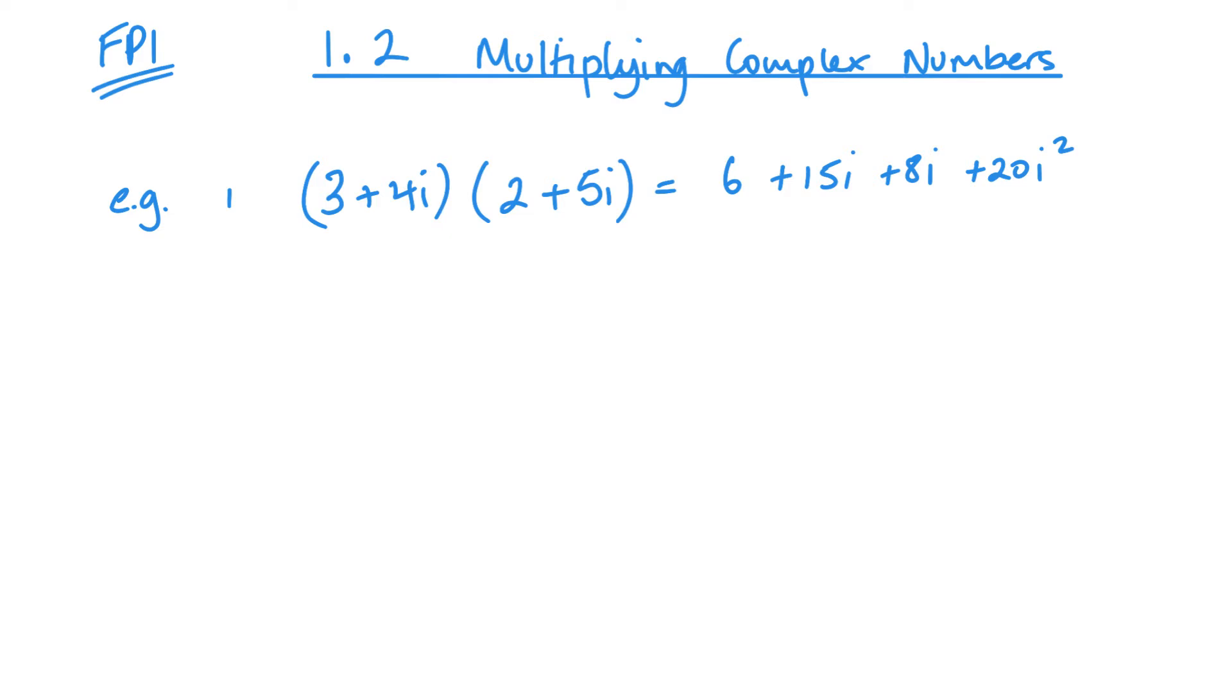And then the only thing that we need to remember is that i squared is equal to negative 1. So you must remember i squared equals negative 1. Remember that, because obviously i is the square root of negative 1. And that's kind of all there is to it, it's going to be very straightforward now...